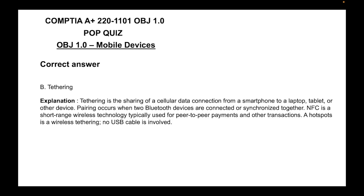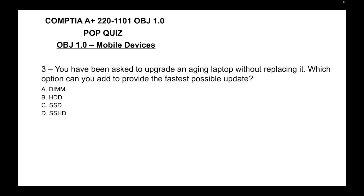The correct answer is B, tethering. Tethering is the sharing of a cellular data connection from a smartphone to a laptop, tablet, or other device. Pairing occurs when two Bluetooth devices are connected or synchronized together. NFC is a short-range wireless technology typically used for peer-to-peer payments and transactions. A hotspot is wireless tethering — no USB cable involved.